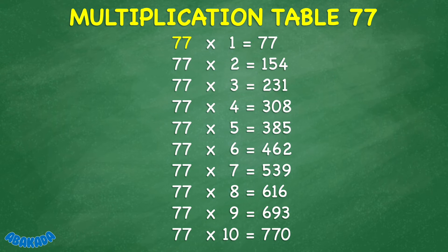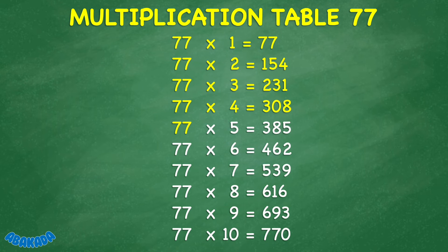77 times 1 equals 77. 77 times 2 equals 154. 77 times 3 equals 231. 77 times 4 equals 308. 77 times 5 equals 385. 77 times 6 equals 462. 77 times 7 equals 539. 77 times 8 equals 616.